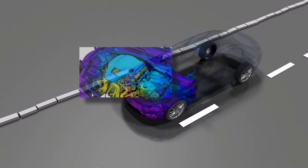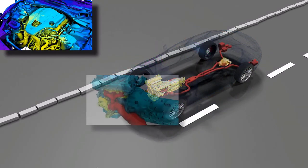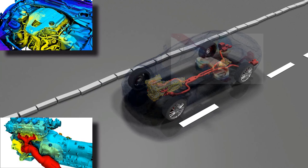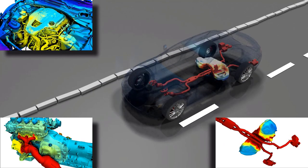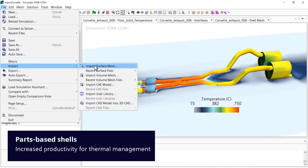Modeling the thermal response of products with many thin structures can be challenging due to the labor-intensive setup of the simulation. To enable accurate yet efficient conjugate heat transfer analysis for such configurations, Simcenter Star CCM Plus 2021.2 introduces the new parts-based shells capability.